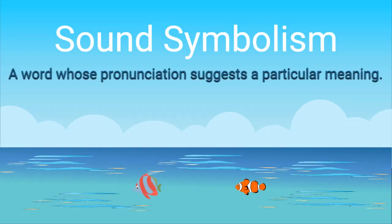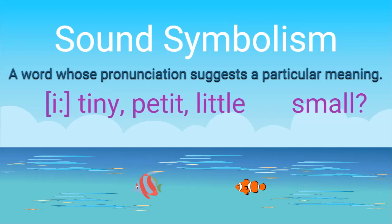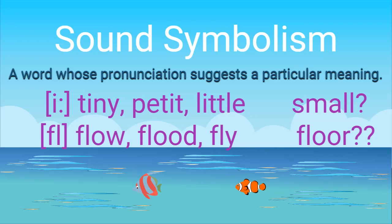Another exception for arbitrariness is sound symbolism — a word whose pronunciation suggests a particular meaning, meaning one sound can represent one meaning. For example, the sound EE suggests something tiny, giving us words like tiny, pretty, and little — though 'small' has no EE vowel. Another example is FL, which seems to represent something flexible, giving us flow, flood, and fly — but what about 'floor'? Is that flexible? So onomatopoeia and sound symbolism are not strong exceptions for arbitrariness, and we can still say there is no natural connection between form and meaning.